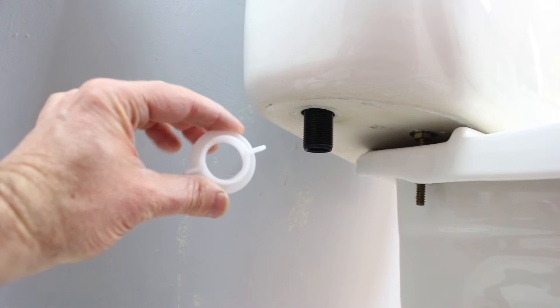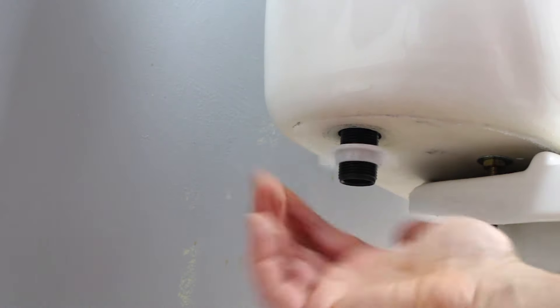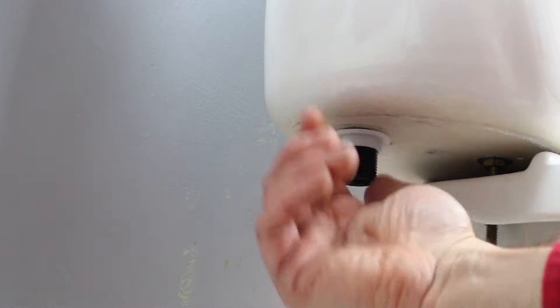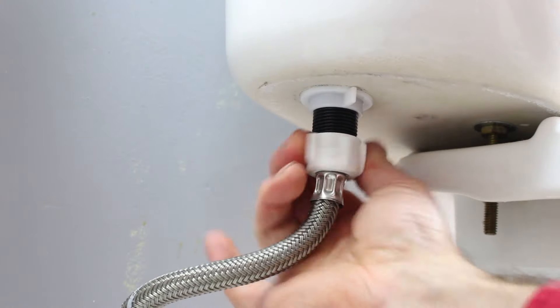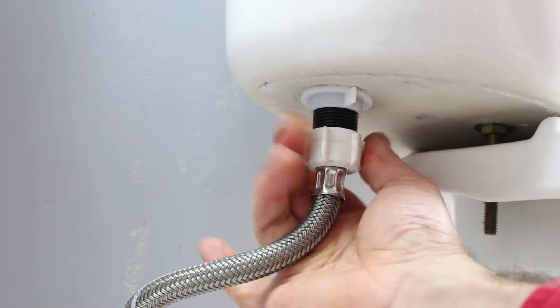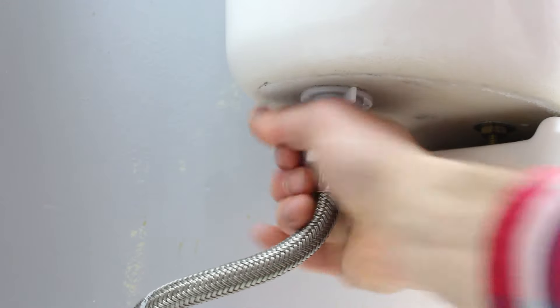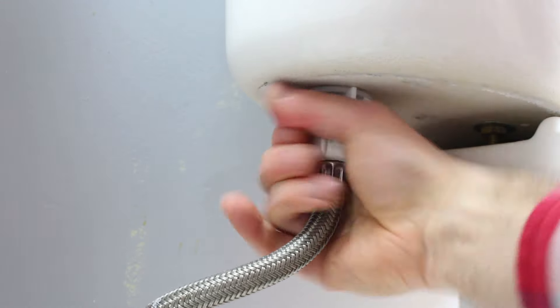Now this nut is for the new fill valve. We're going to put that on. You want to make sure that this is tight because you don't need any other tools to tighten the fill valve. Now we're going to add the supply line to the bottom of the fill valve. We're just going to be hand tightening all of these parts. You shouldn't need any type of tool.